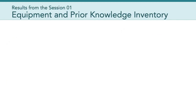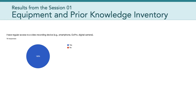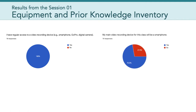I want to spend a couple of minutes just sharing with you the results from the equipment and prior knowledge inventory. As you can see here, everyone in the class has access to a video recording device. That's great. 72%, or 13 of the 18 of you that responded, said that your main recording device is going to be your smartphone, which means another five of you have some sort of other device.